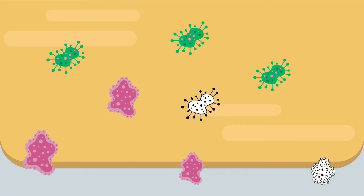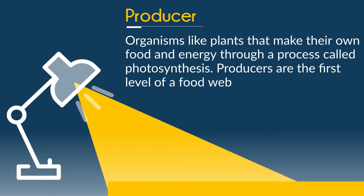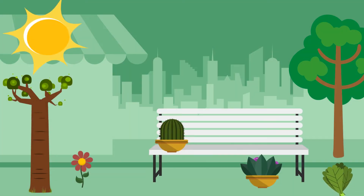Next, we have a producer. Organisms like plants that make their own food and energy through a process called photosynthesis. Producers are the first level of a food web. And here are some producers doing their thing.